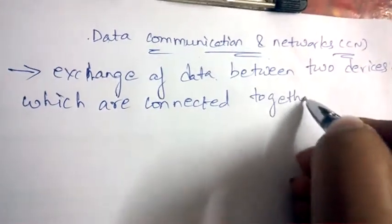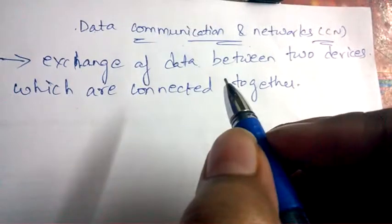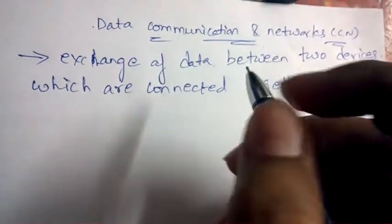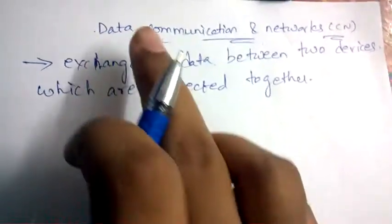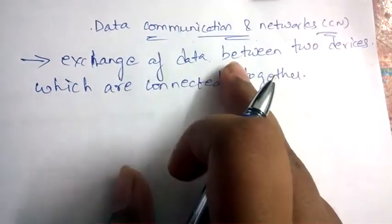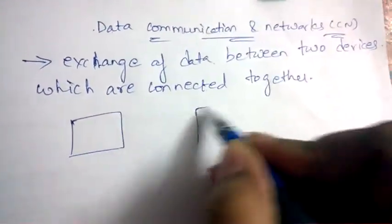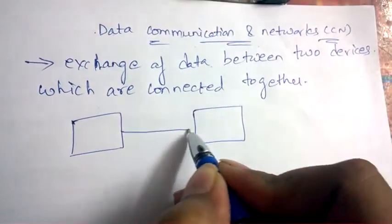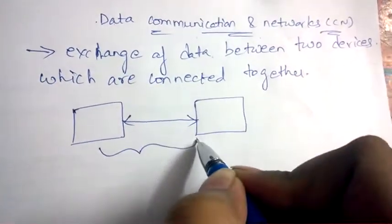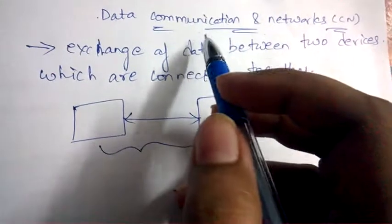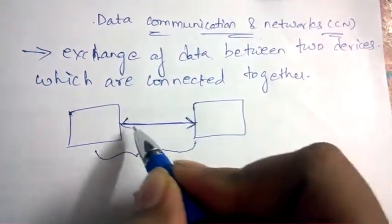This is one of the most important as well as most interesting subjects, so listen carefully. Data communication is the exchange of data between two devices which are connected together. Let there be two devices — they should be connected together, then communication can occur between them, which is known as data communication.